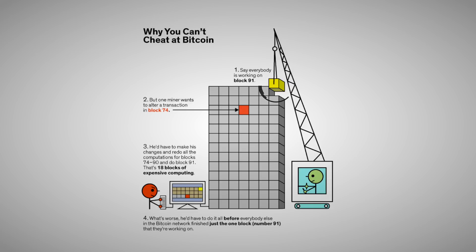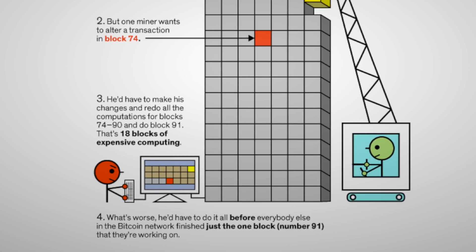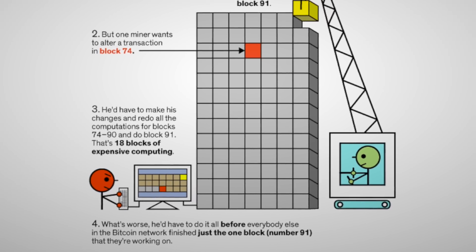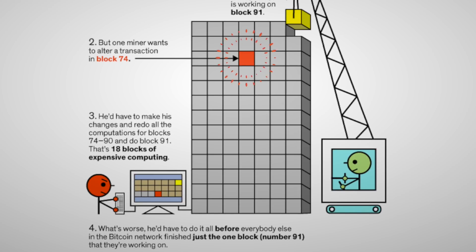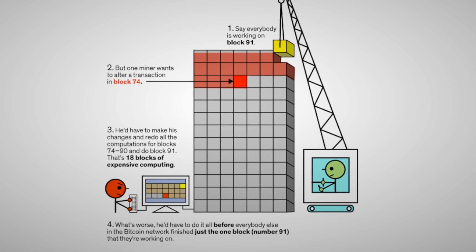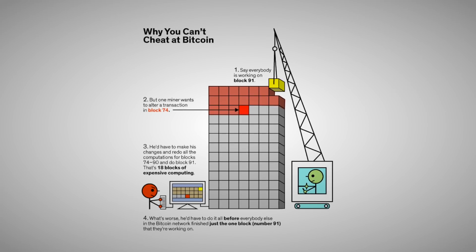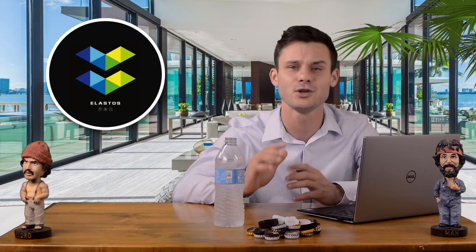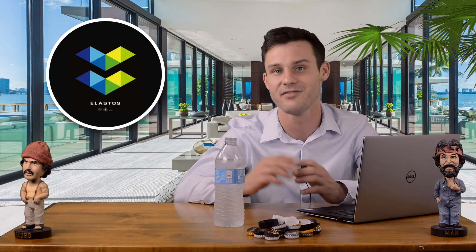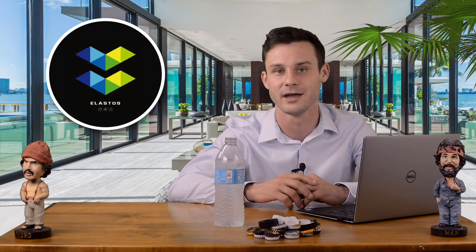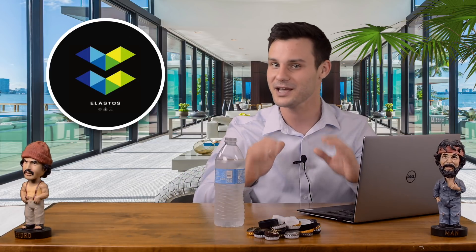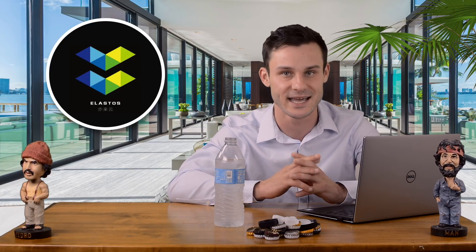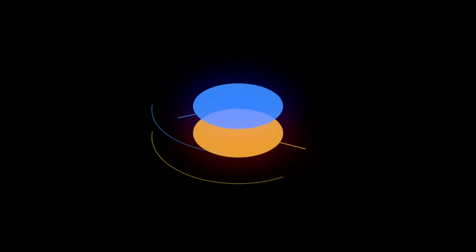If everybody is working on block 91 and the miner wants to alter a single transaction contained in block 74, the attacker would need to make his changes, then redo all the computations for block 74 to 90, including all the calculations described above, and then do block 91. That's 18 blocks of extremely expensive computing, and they would have to do it all before the entirety of the Bitcoin network finished just the single block they are working on. So Bitcoin is about as secure as it gets, and this will be the case for the foreseeable future.